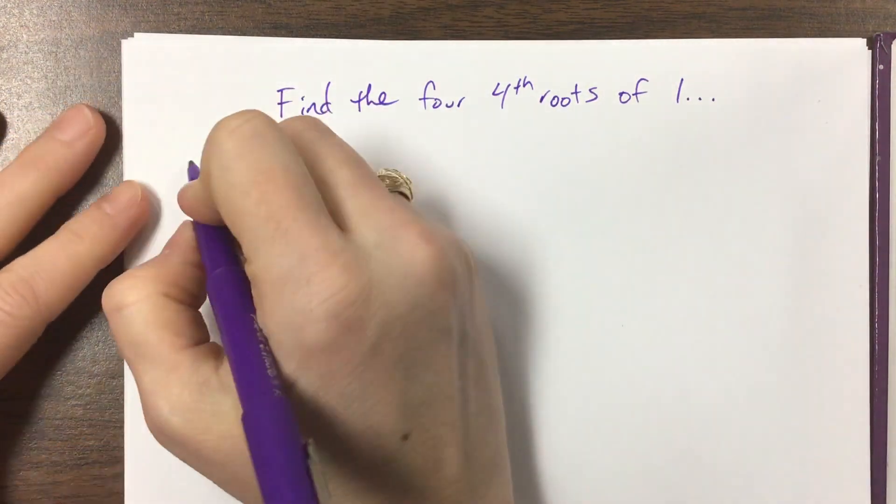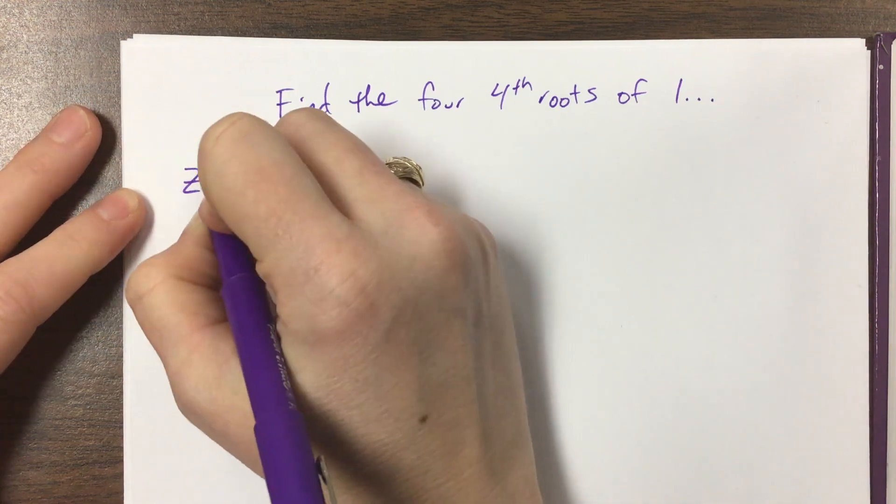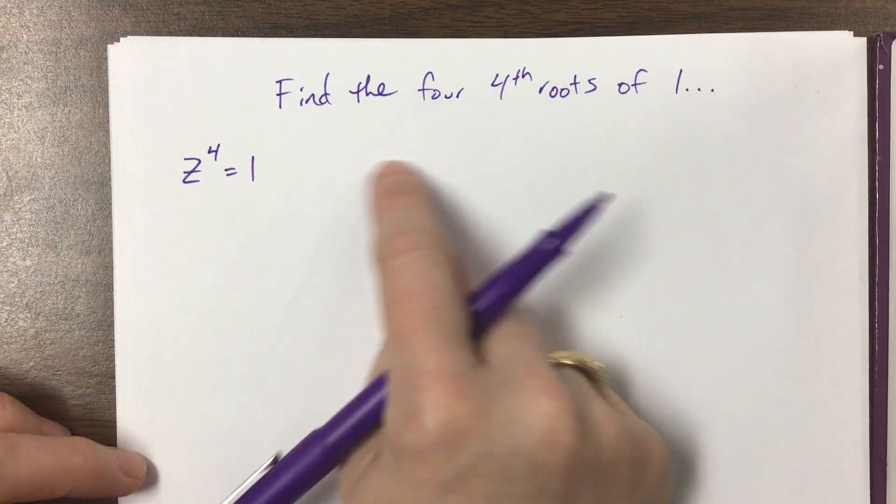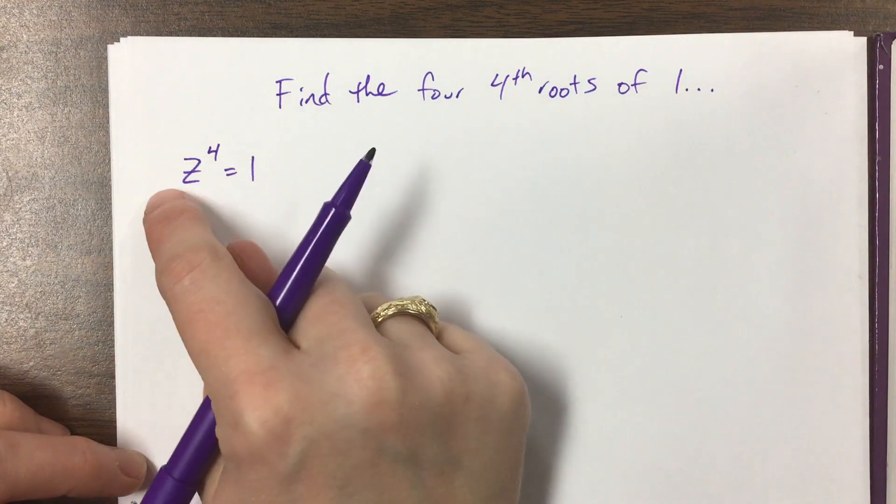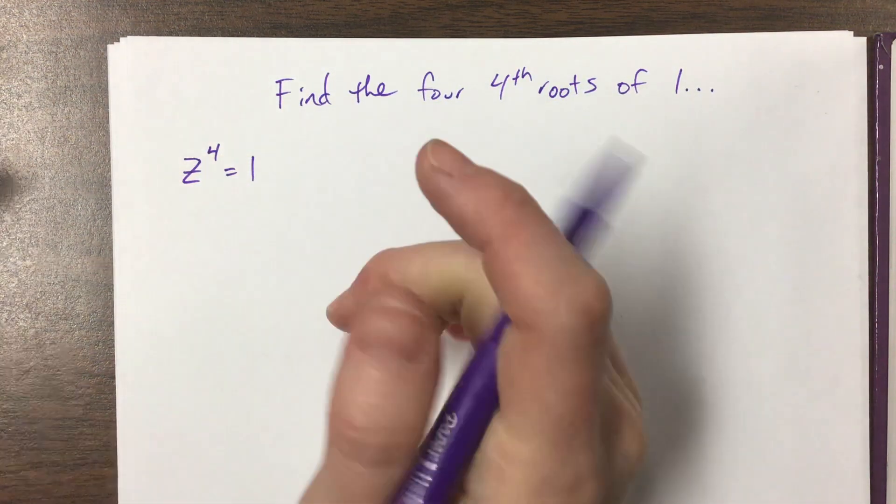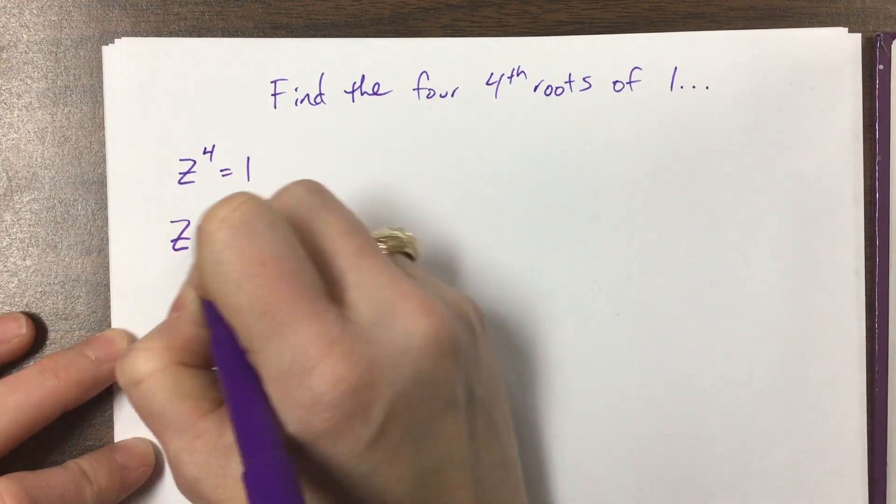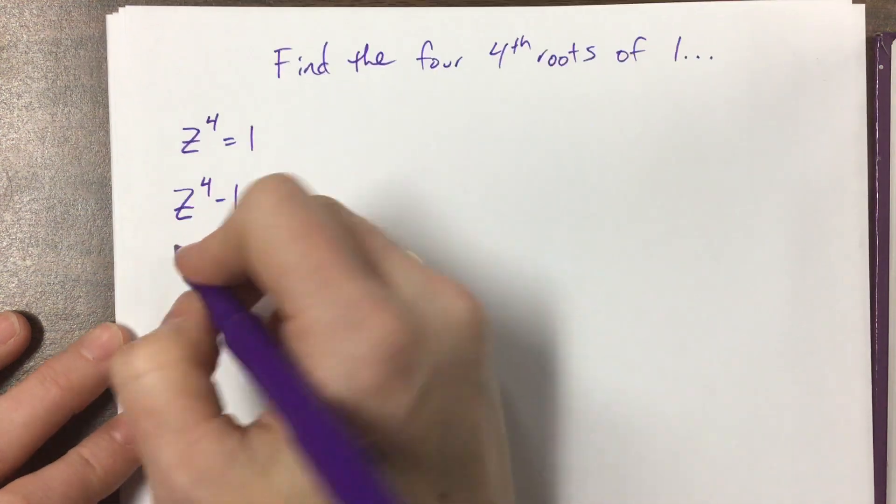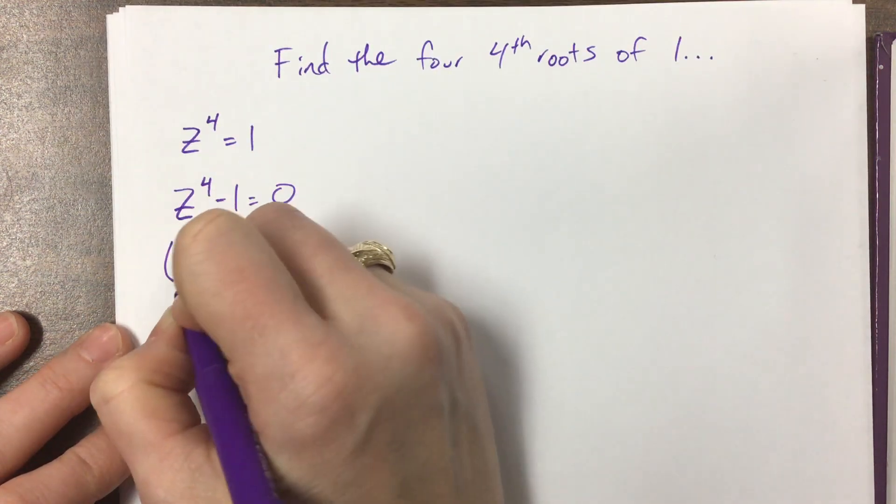So what this is saying is we have a complex number that if we raise it to the fourth power, we get 1. That would be the four fourth roots. If I take the fourth root of each side, that sort of thing. So this would be equal to that, z to the fourth minus 1. So then these are both perfect squares.